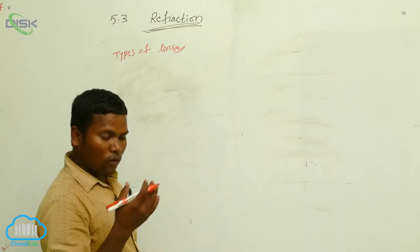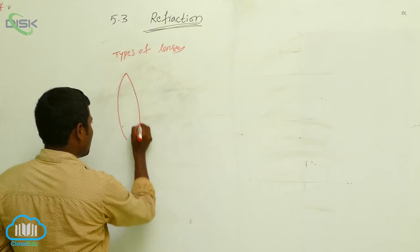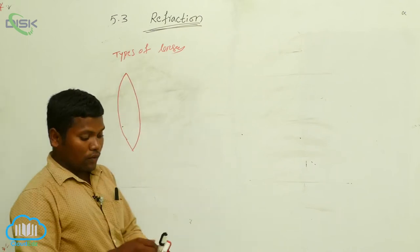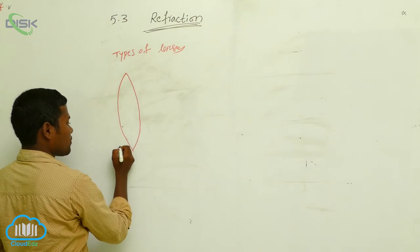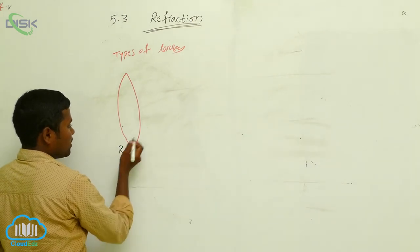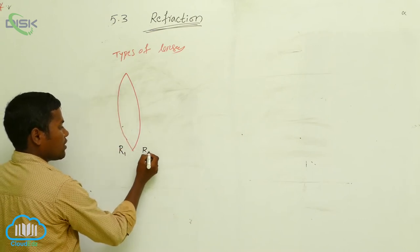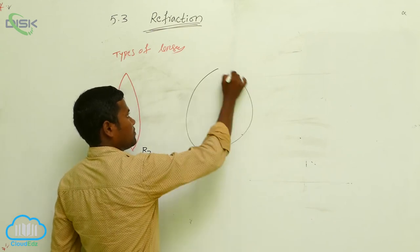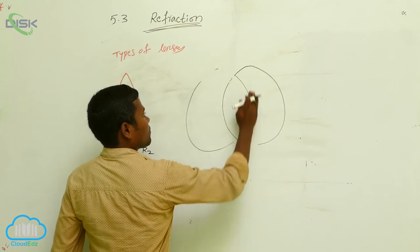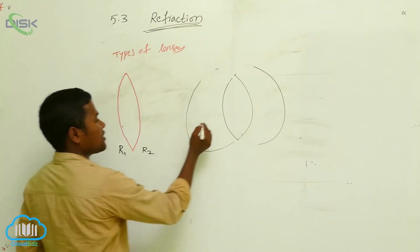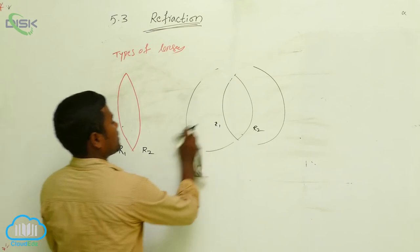There are many types of lenses, but I am going to draw only a few. To get a lens, definitely two surfaces will be present. This is the first surface — let us take this as one curvature — and another curvature is there, so this is R2. Again another sphere is there, so this is R1 and this is R2.